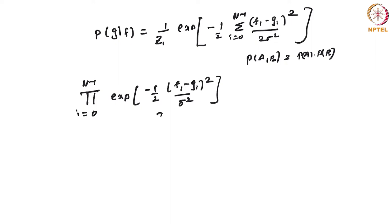Since P(A and B) = P(A)·P(B) if A and B are independent, we can write this for the entire image. Since this is an exponential distribution, the product sums up in the exponent, and we get this expression.